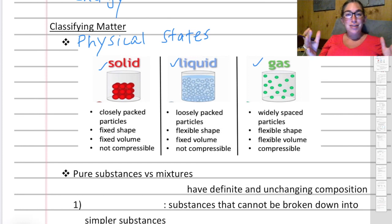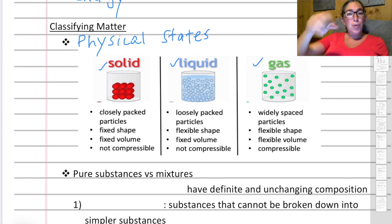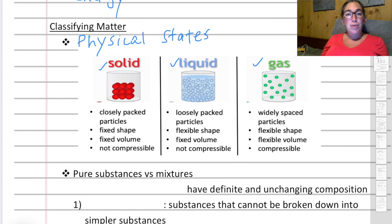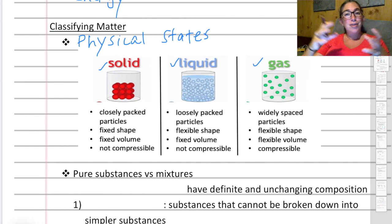Liquids are loosely packed — they're still together but can roll around each other. That gives them a flexible shape but still a fixed volume. You can take a beaker of water and pour it into containers of different shapes; the water always takes the shape of the container, but the volume remains the same. Liquids are also not compressible. In a gas, the particles are very spread apart and flying around really fast, giving gases both a flexible shape and a flexible volume because they are compressible — you can compress them to a smaller volume, or reduce the pressure for a larger volume.